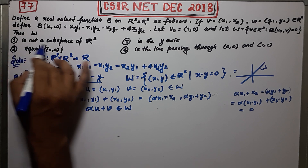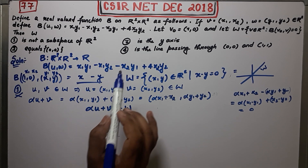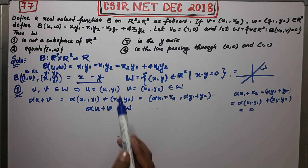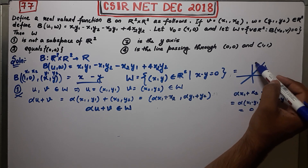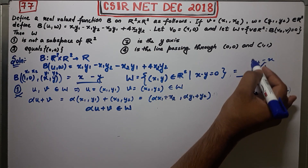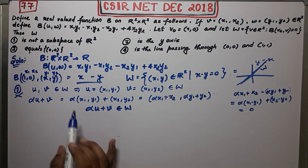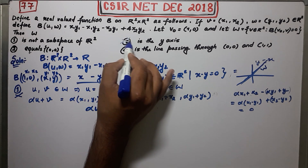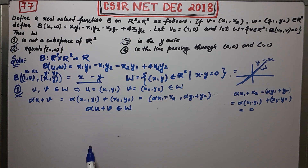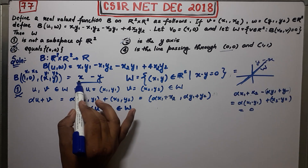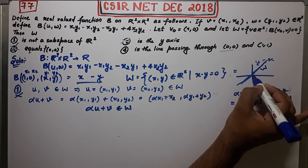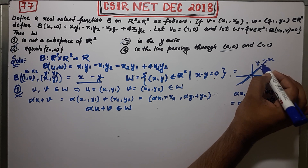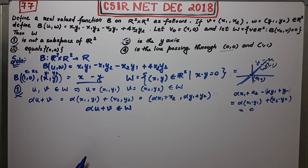So option one is incorrect — it says W is not a subspace of R². Option two says W is the y-axis, but it's not; it's the line y = x passing through the origin, not the y-axis. Option three says W equals {(0,0)}, which is also incorrect. Option four says W is a line passing through (0,0) and (1,1). Since 0 − 0 = 0 and 1 − 1 = 0, both points satisfy x − y = 0, so (0,0) and (1,1) both lie on this line.